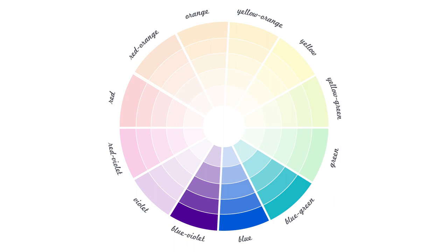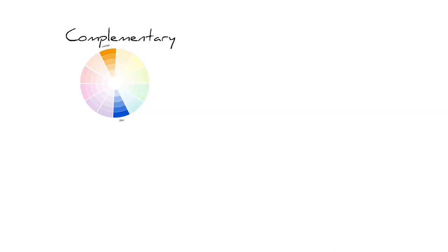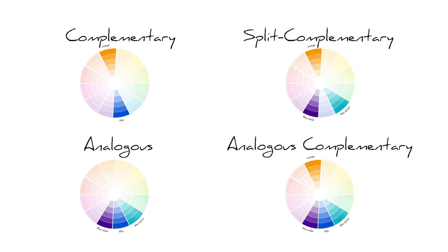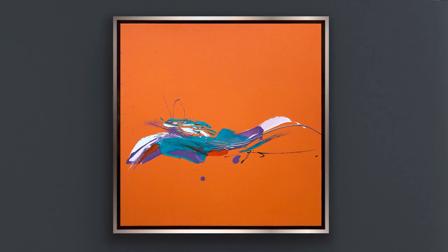Let's summarize what color harmonies we've learned. A complementary harmony: two opposite colors. A split complementary harmony: two colors separated by one, plus the opposite color. An analogous harmony: three adjacent slices. An analogous complementary harmony: three adjacent slices plus the opposite one. These are not all existing harmonies, but only those that relate to today's painting. I don't want to overwhelm you with information, but give it in small chunks for more effective learning.